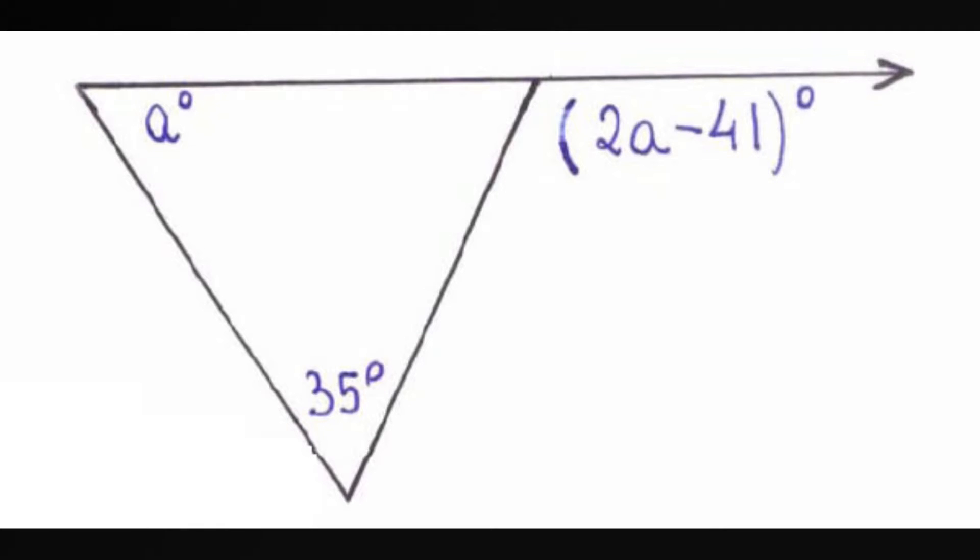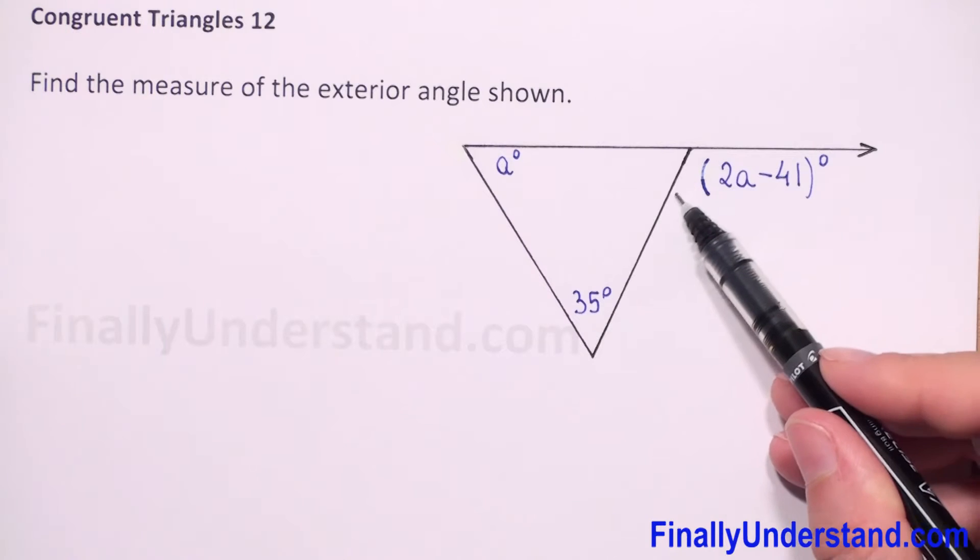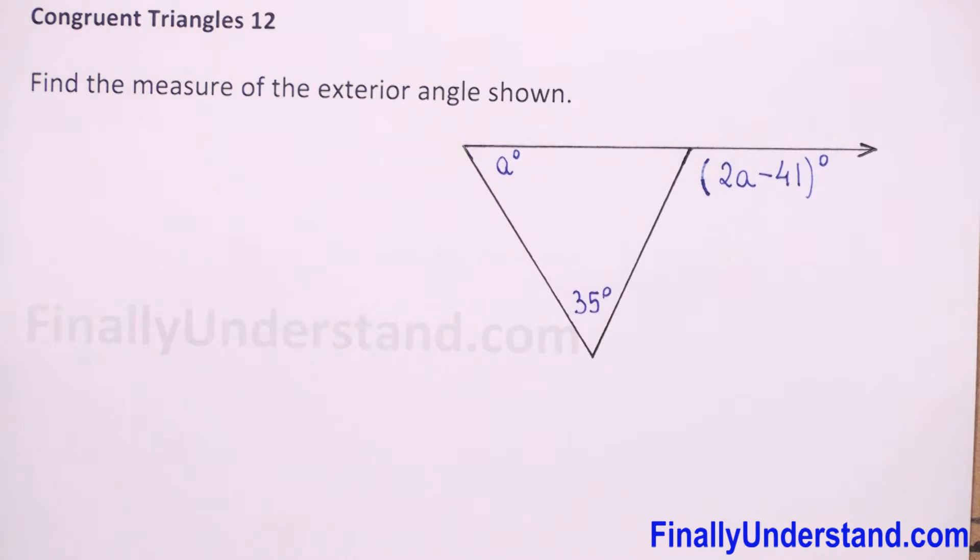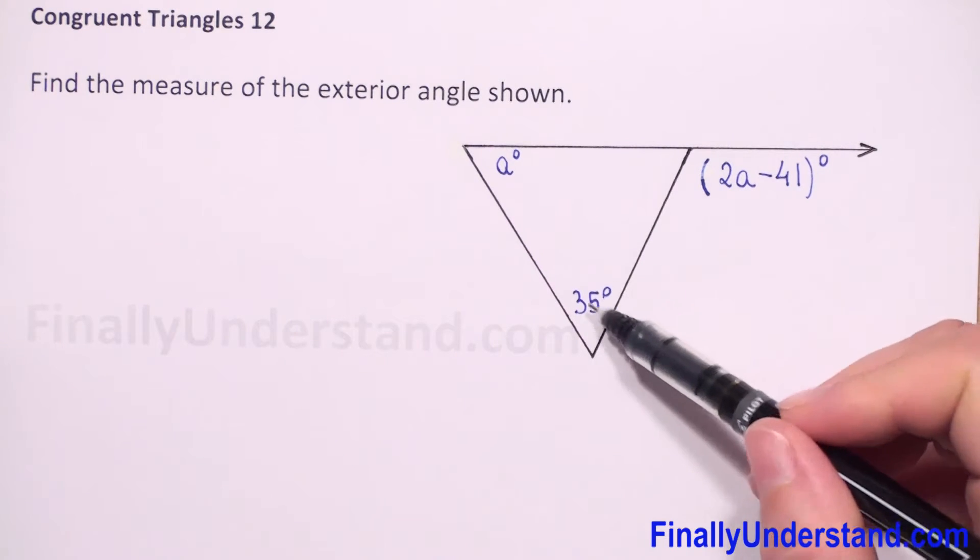Find the measure of the exterior angle shown. This is our exterior angle, and to find the measure of this angle we will use the exterior angle theorem, which tells us that the measure of the exterior angle of a triangle is equal to the sum of the measures of the two non-adjacent interior angles.